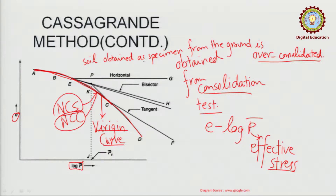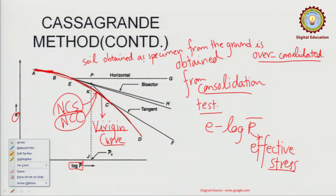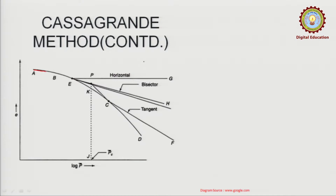AB is for recompression and after that, the CD portion is for the normally consolidated range. AB is the recompression curve — flatter — and the CD portion is the virgin compression curve with a steeper slope. In the transition range BC, the slope gradually changes, and the pre-consolidation pressure falls in this range.